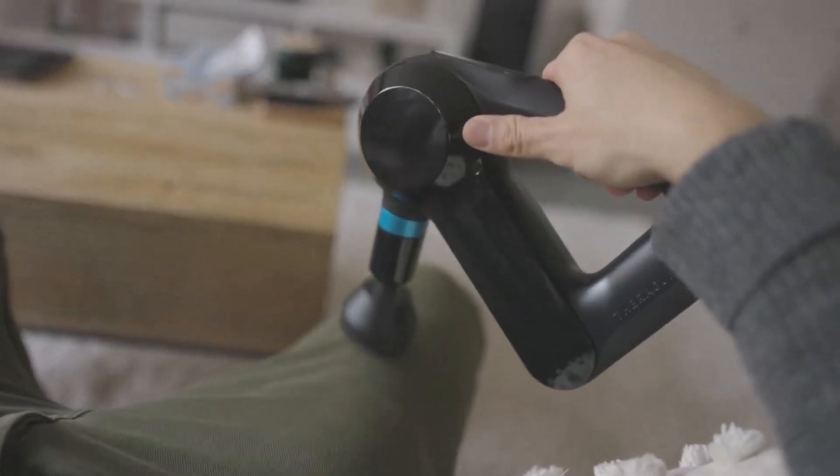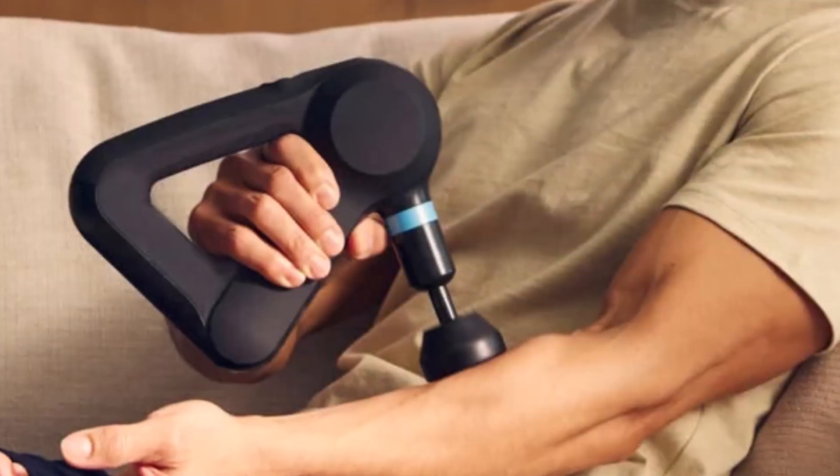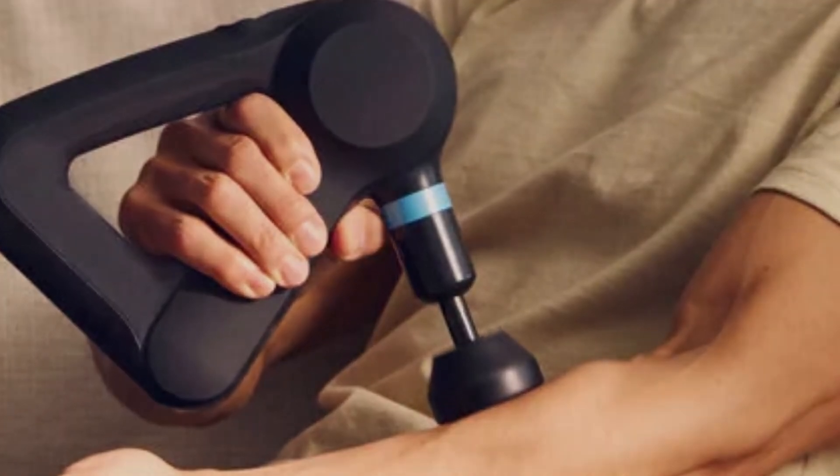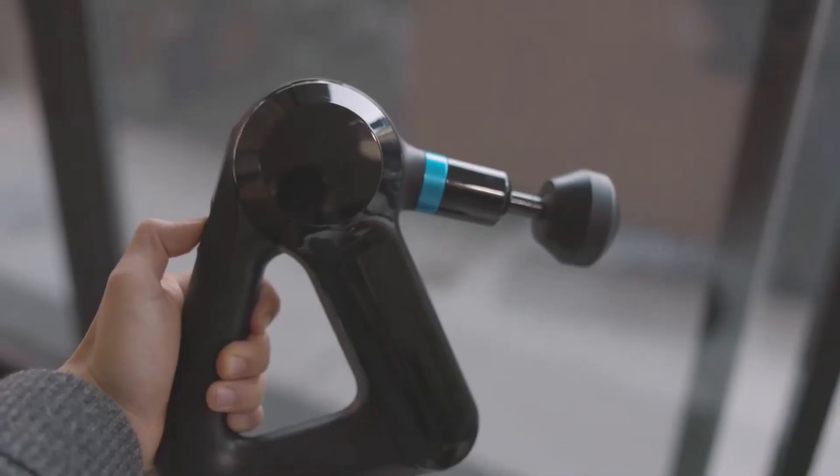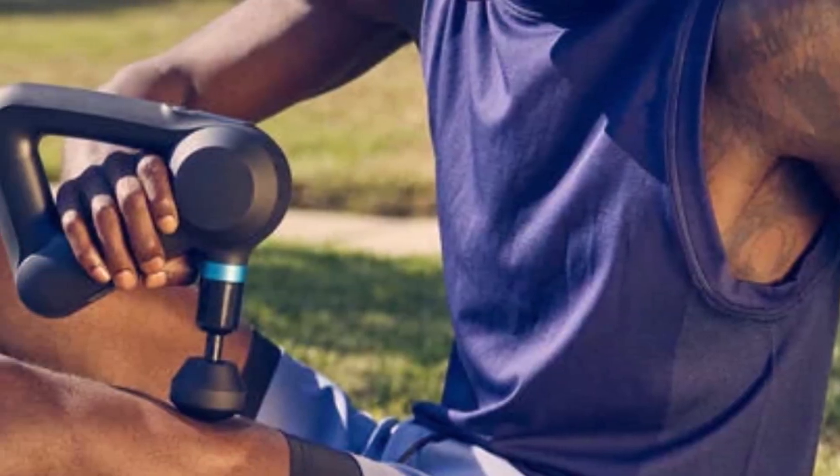It includes 5 attachments: dampener, standard ball, wedge, thumb, and cone, and allows access to preset-guided routines via the Therabody app, compatible with both iPhone and Android. With a 120-minute battery life, the Elite displays its current speed and battery status on screen.